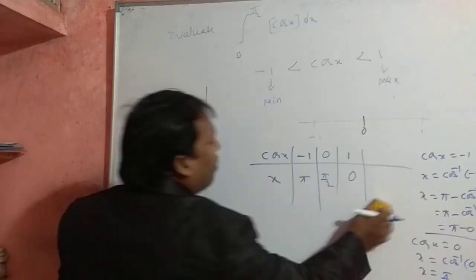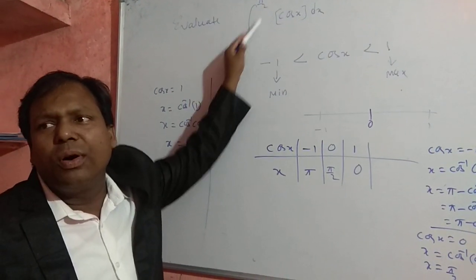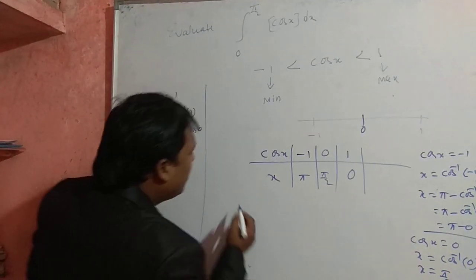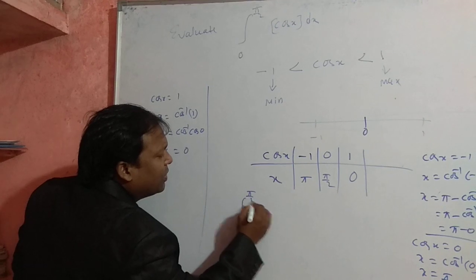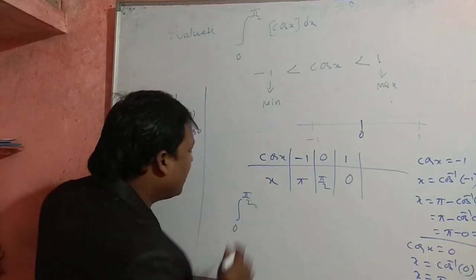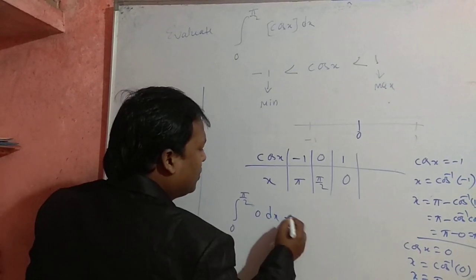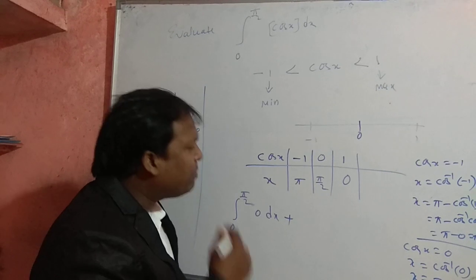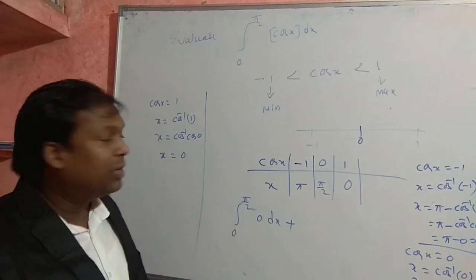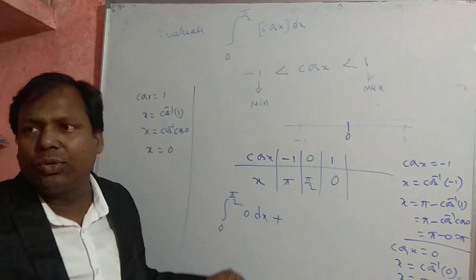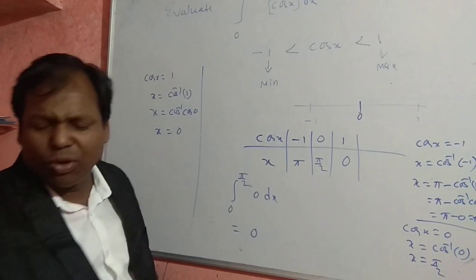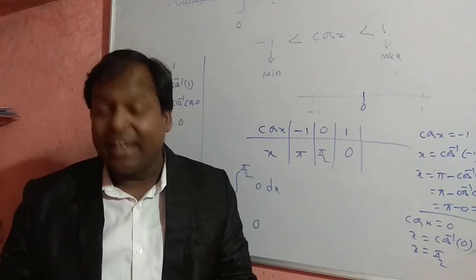Now observe: our question has integration from 0 to π/2. From the table, in the interval 0 to π/2 the greatest integer function ⌊cos x⌋ = 0. So the integral becomes ∫₀^(π/2) 0 dx. The range π/2 to π is not required since our bounds are only 0 to π/2. Therefore the value of the integral is 0.